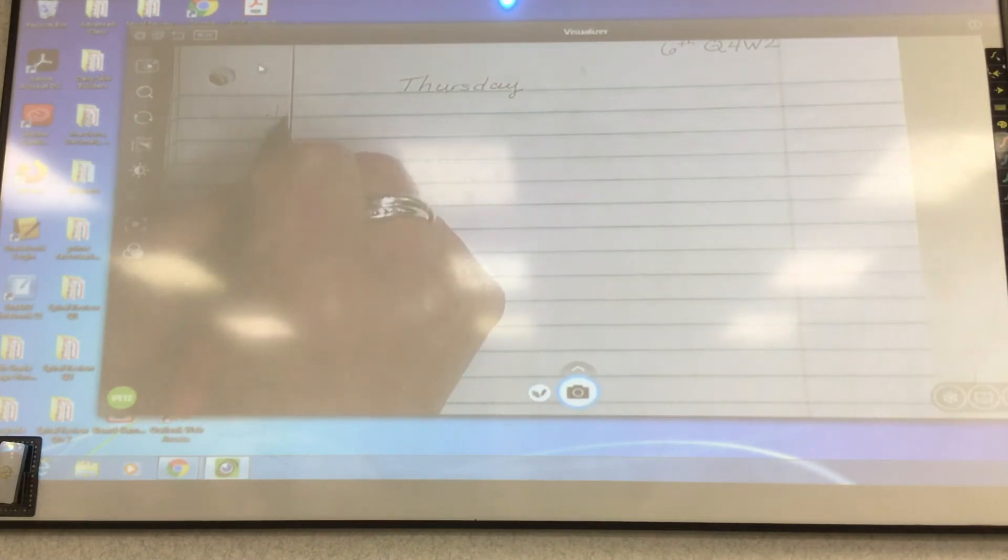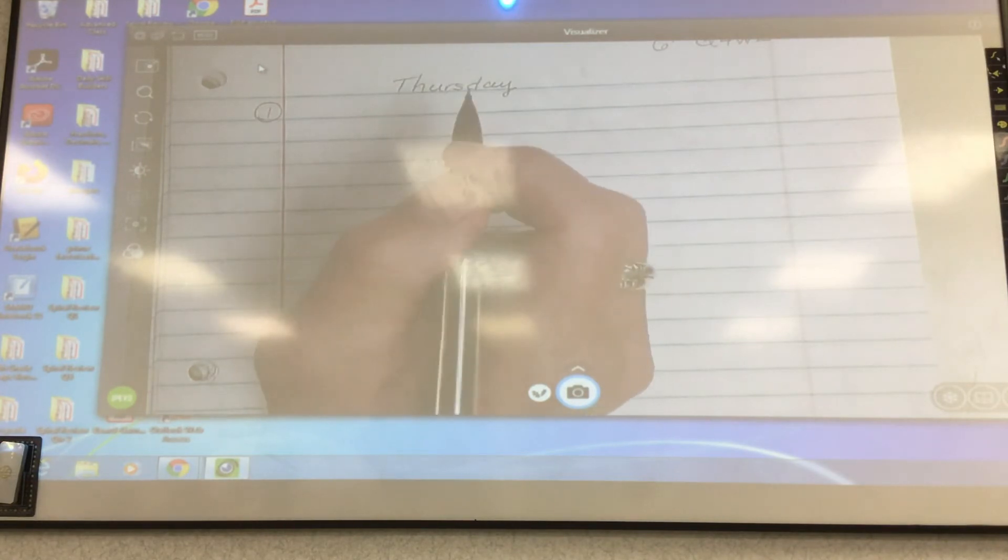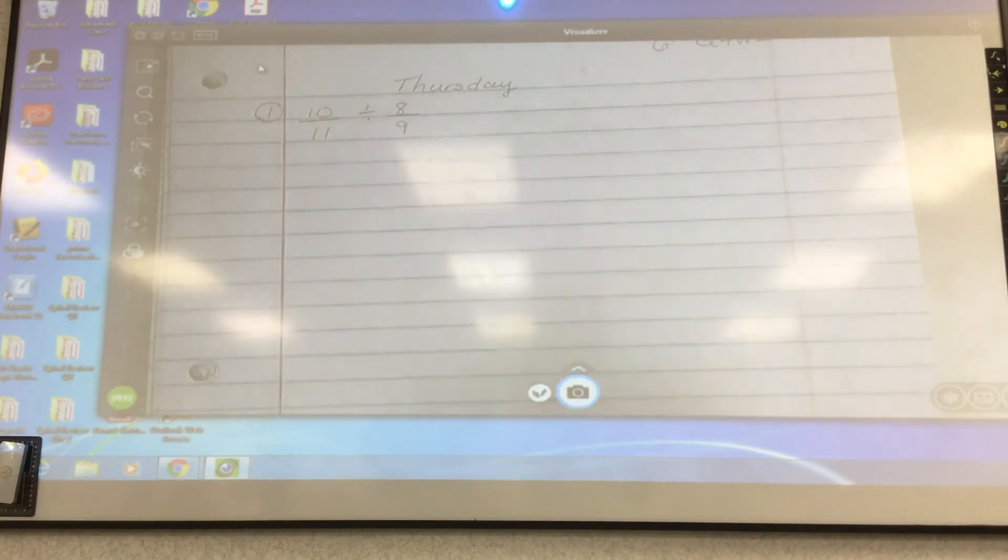So we'll start with number one. Put a number one, circle it, and notice I'm going to be using my lines and I'm going to be making this neat. You're going to grade with a grading pen. So go ahead, even if you didn't get to it, to get used to grading with a grading pen on this. So we start with 10/11 divided by 8/9. And the rule for dividing is what? Just tell me, guys. You need to change the division. Right, I'm going to keep, change the division to multiplication, and instead of saying flip, it's actually called the reciprocal.